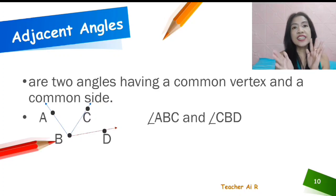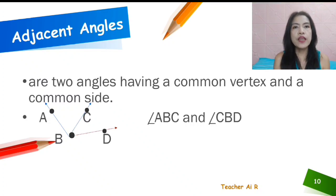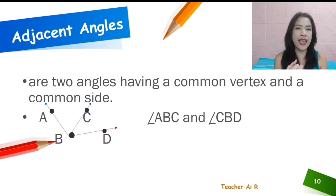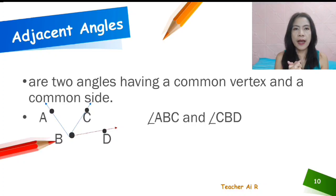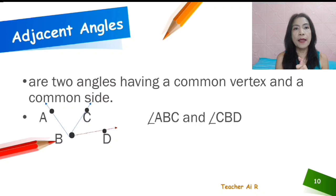Let's discuss them one at a time. When we have adjacent angles, they are two angles having a common vertex and a common side. In this figure, we have angle ABC and angle CBD — they are adjacent angles, meaning they have the same vertex B and the common side BC.